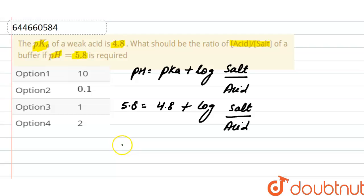log of salt divided by acid equals 1, and antilog of 1 will be 10.